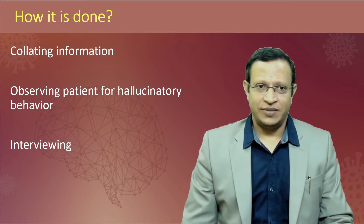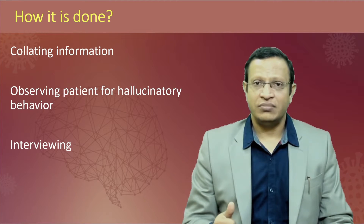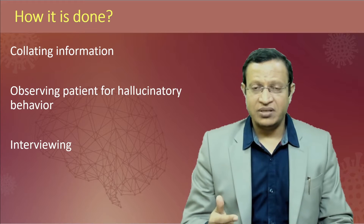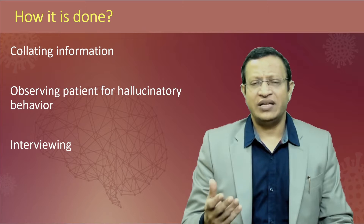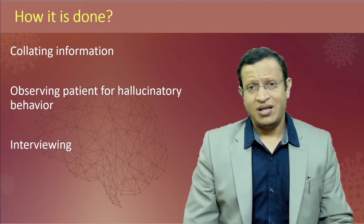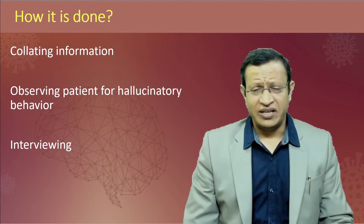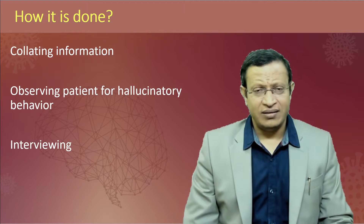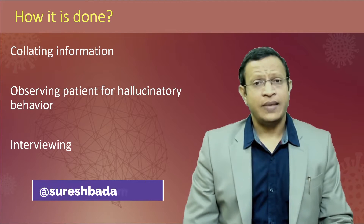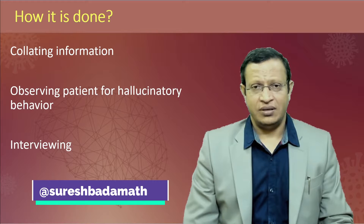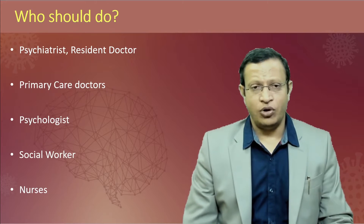How to assess perception? Disorders of perception are assessed by collating information from all possible sources — family members, friends, workplace, and various significant people who can give information about the patient. Ask about whether the patient has any hallucinatory behavior: talking to self, smiling to self, gesturing, or saying that somebody is standing in front of him where nobody else can see them. Interviewing the patient is also important. All these sources will indicate whether the patient had any perceptual abnormalities.